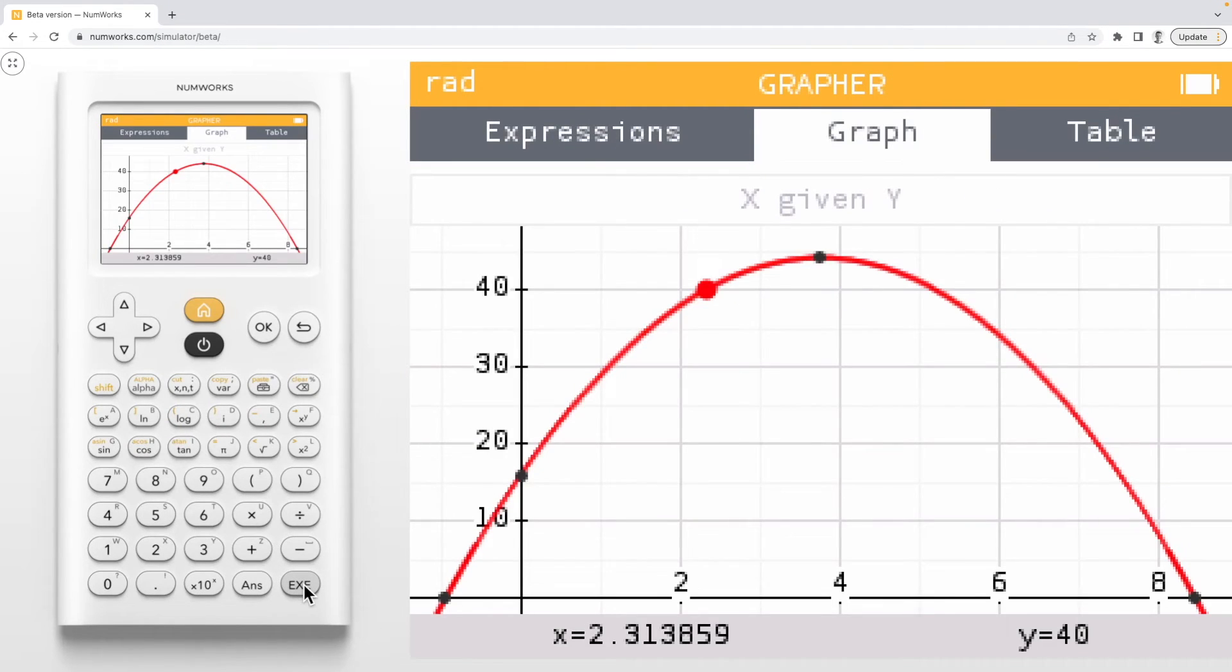Just like before, the left and right arrows allow you to find additional x values for this given y value.